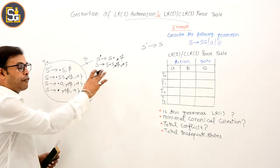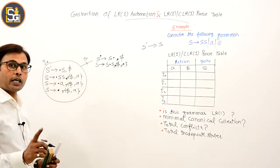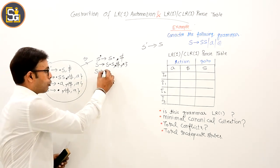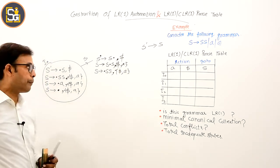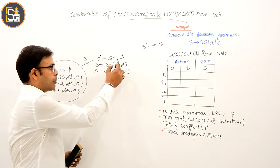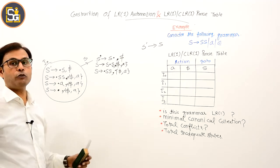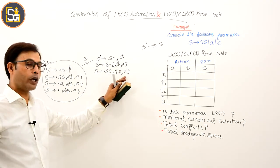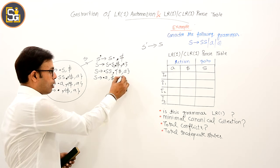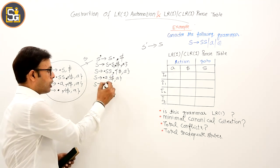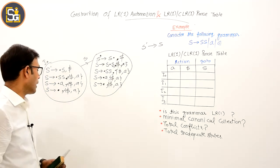Look ahead पे कोई फर्क नहीं पड़ता while computing go-to entry. Dot के बाद capital S non-terminal है, तो closure भी लिखना पड़ेगा. Compute करके देख लो: dollar, a के लिए closure लिखोगे तो S derives dot a comma dollar/a और S derives dot comma dollar/a — यही आएंगे. इस तरह से यह state complete होती है.